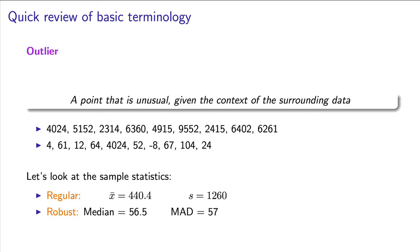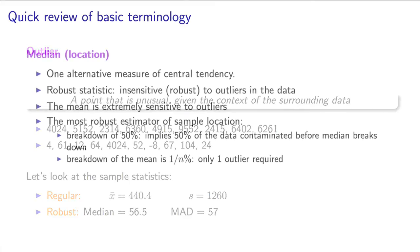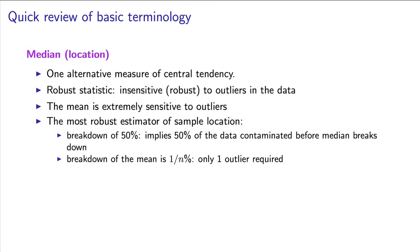You would have to replace just under half the data with outliers before the median breaks down as an estimate of location. We say that the median has a breakdown of 50%. The mean, on the other hand, has a breakdown of 1 divided by n — only a single outlier contaminates the mean and can make it unreliable as a measure of centrality.